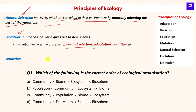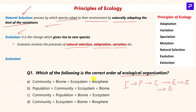Let us now look at a few questions from this chapter. Question: Which of the following is the correct order of ecological organization? The correct order starts with individual, giving rise to populations; different populations give rise to communities; different communities give rise to ecosystems; then biomes and biosphere. So the correct answer is D: community, ecosystem, biome, and biosphere.